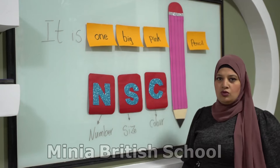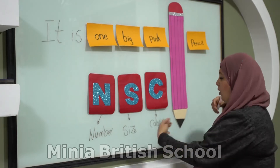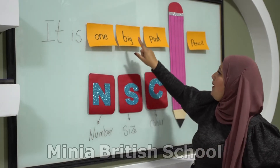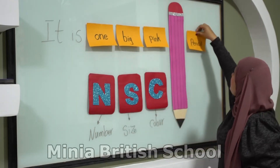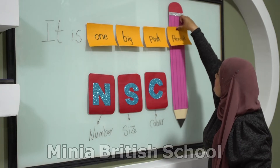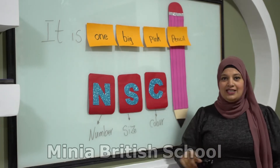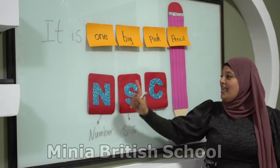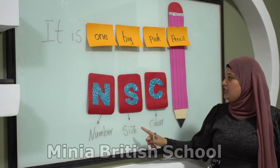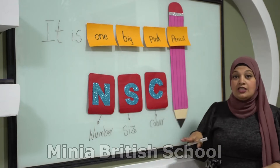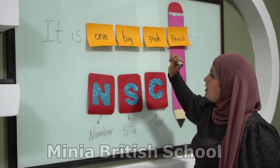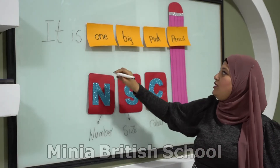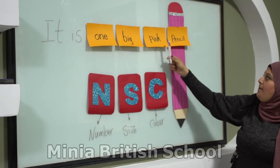What? Table? No. What? White wood? No — a pencil! So I will say 'it is one big pink' and then the name of the thing: pencil. Let's see again — N, S, C: N for Number, S for Size, C for Color. So this is our magic words. Let's read all the sentence again: It is one big pink pencil.